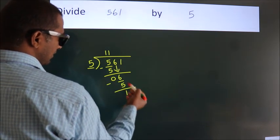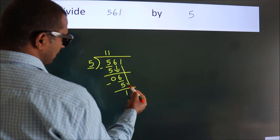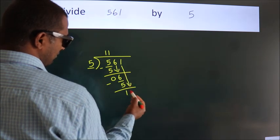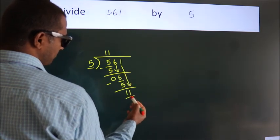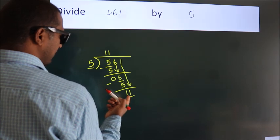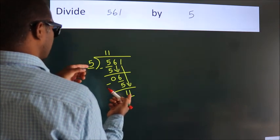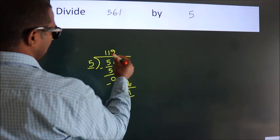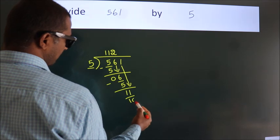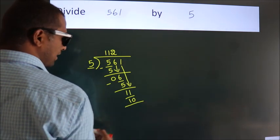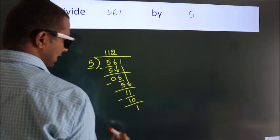After this, bring down the beside number. So 1 down, so 11. A number close to 11 in the 5 table is 5 times 2 is 10. Now we subtract, we get 1.